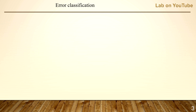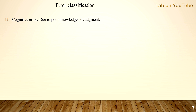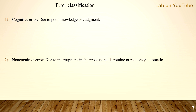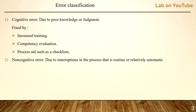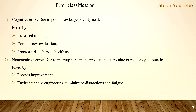Errors in general can be classified into two types. Cognitive errors — due to poor knowledge and judgment — and non-cognitive errors — due to interruptions in the process that is routine or relatively automatic. Cognitive errors can be fixed by increased training, competency evaluation, and process aids such as checklists. Non-cognitive errors can be fixed by process improvement and environment re-engineering to minimize distractions and fatigue.